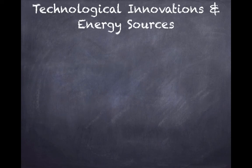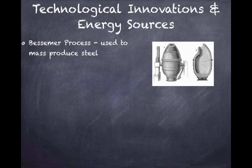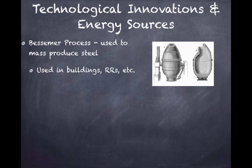Looking at technological innovations and energy sources of this time period — after the Civil War — you're seeing the growth of major industries in the United States, also the growth of corporations. When it comes to technological advancements, we look at the Bessemer process, which was used to mass produce steel. This is very important for urbanization, the growth of cities and skyscrapers, and also for transportation with the growth of railroads. It works by injecting air into iron ore, which helps make steel more efficiently and quickly on a large scale. And steel is stronger than iron.